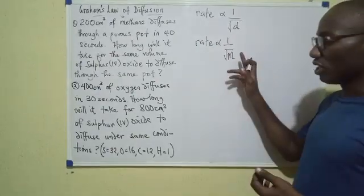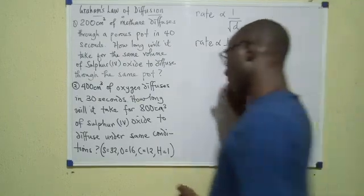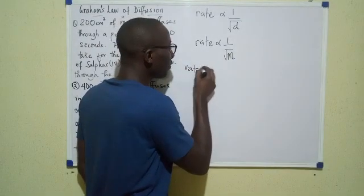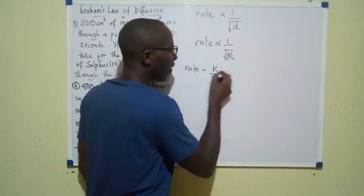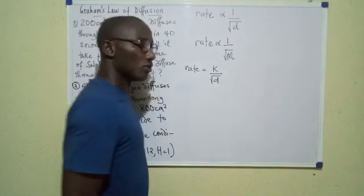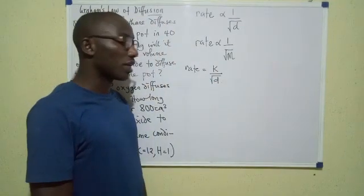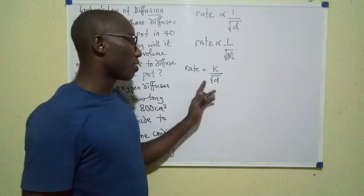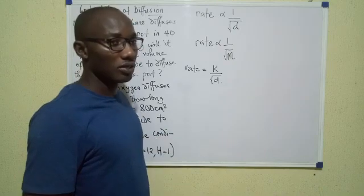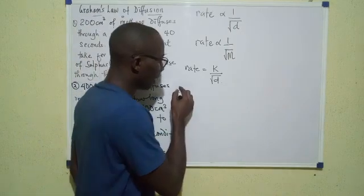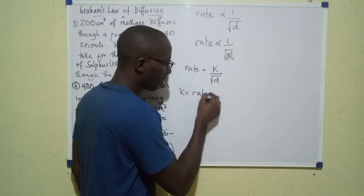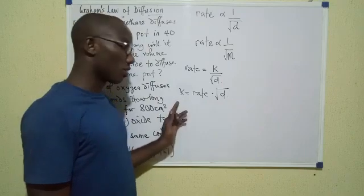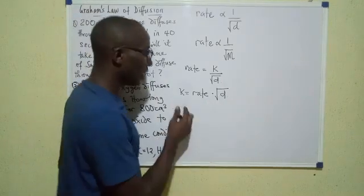Now as usual, we could introduce a constant to this expression. I could write rate equals k over root d. So rate of diffusion equals k, the constant, over the square root of the density. And from here, if we make k the subject of formula, we would have k equals rate multiplied by root d.